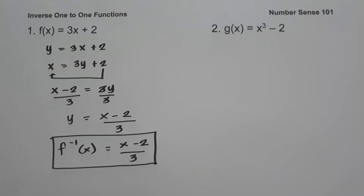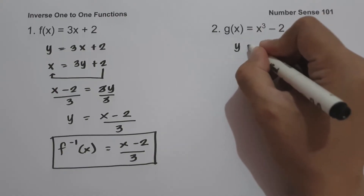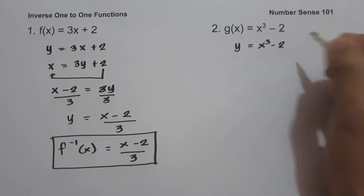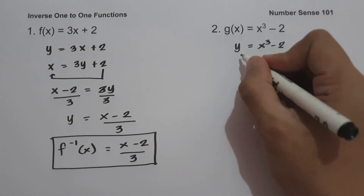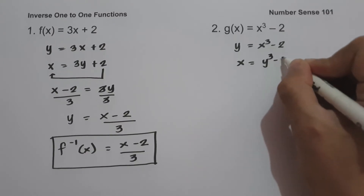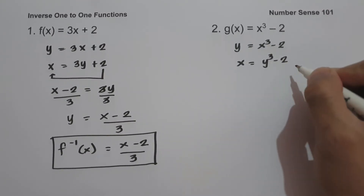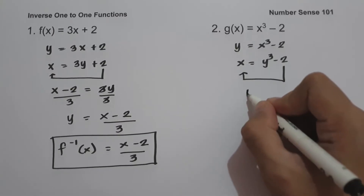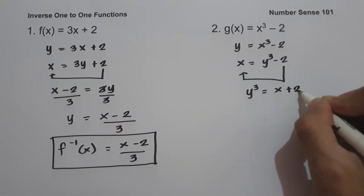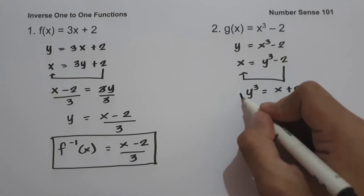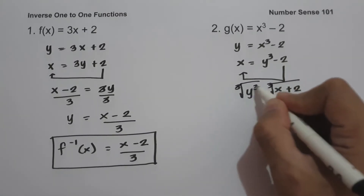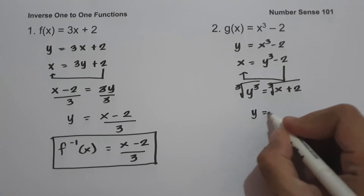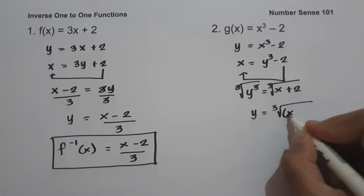On number two, we have g(x) = x³ - 2. Write the function as y = x³ - 2. Interchange x and y variables, so x = y³ - 2. Solve for y: move -2 to the side of x, giving y³ = x + 2. To eliminate the exponent, take the cube root on both sides. So y = ∛(x + 2).